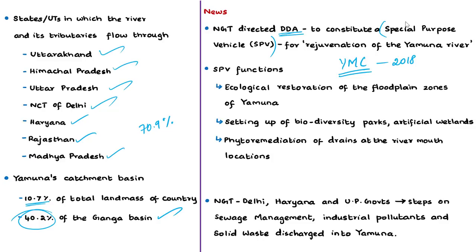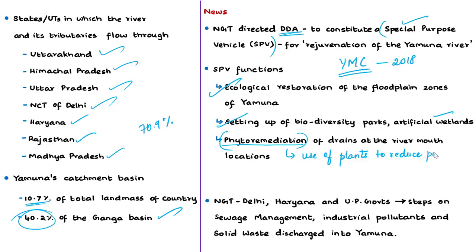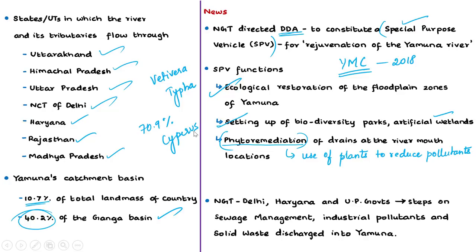After observing the report, NGT directed concerned authorities to comply with its orders. The Special Purpose Vehicle will carry out ecological restoration of floodplain zones, setting up biodiversity parks, artificial wetlands, and phytoremediation of drains at river mouth locations. Phytoremediation is a biological technology used for treating pollutants including heavy metals present in wastewater, where selected plant species mitigate environmental problems from soil, air, or water. Species such as Typha, and cypress are commonly used examples.